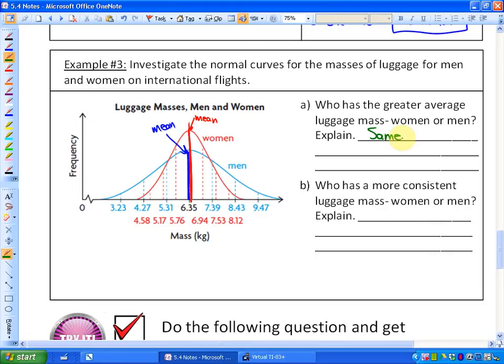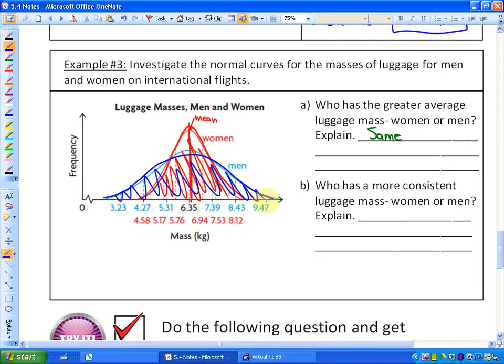Part B, who has a more consistent luggage mass, women or men? So consistency, as we saw in standard deviation section 5.3, has to do with how close stuff is to the mean. What you'll notice here is that women, if you look at their curve, that tends to be more bunched or cluttered together. Whereas men, which I'm just indicating in blue here, their luggage masses are more spread out. So in this case, because the women are all closer to the mean or cluttered together, that means that they're more consistent. So that would be women. And the reason is they are more close to the mean.